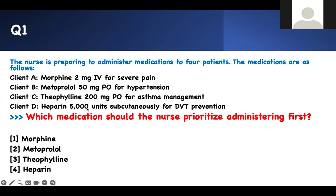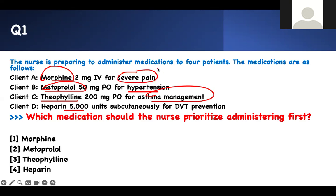You have to look at the condition and know the pharmacology of that medication. The patient has severe pain — do you give that patient the opioid? Patient has hypertension — do you give them metoprolol? Patient has asthma — do you give them theophylline? Or heparin subcutaneous? The medication for hypertension is going to take some time to work, so you have time.